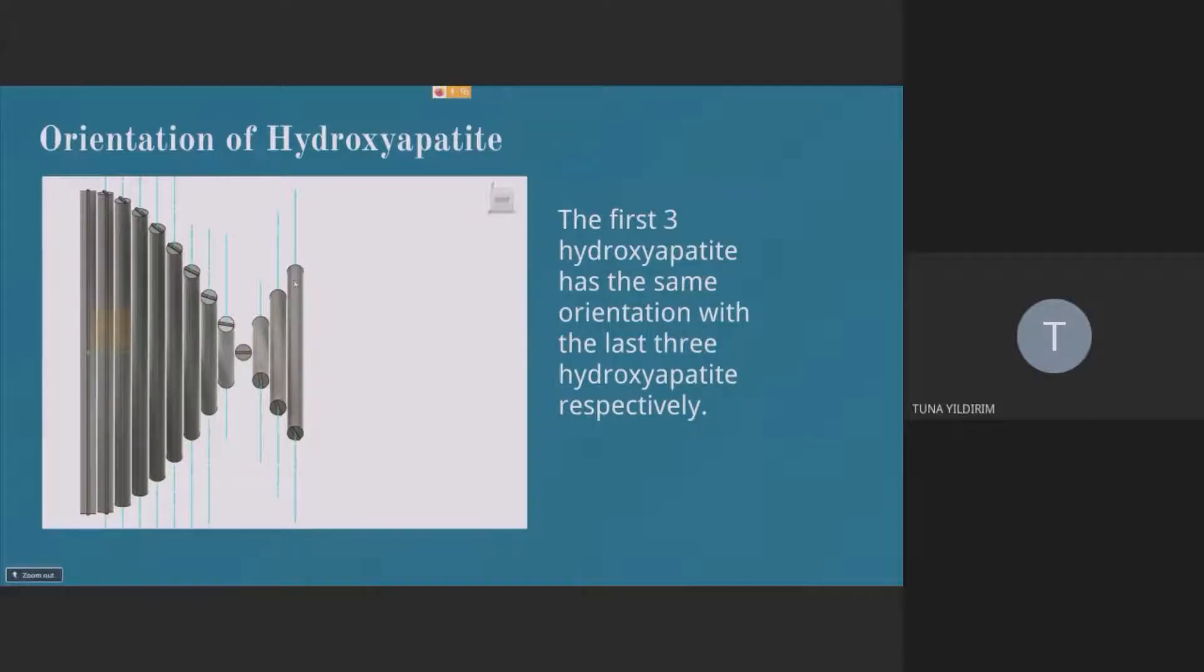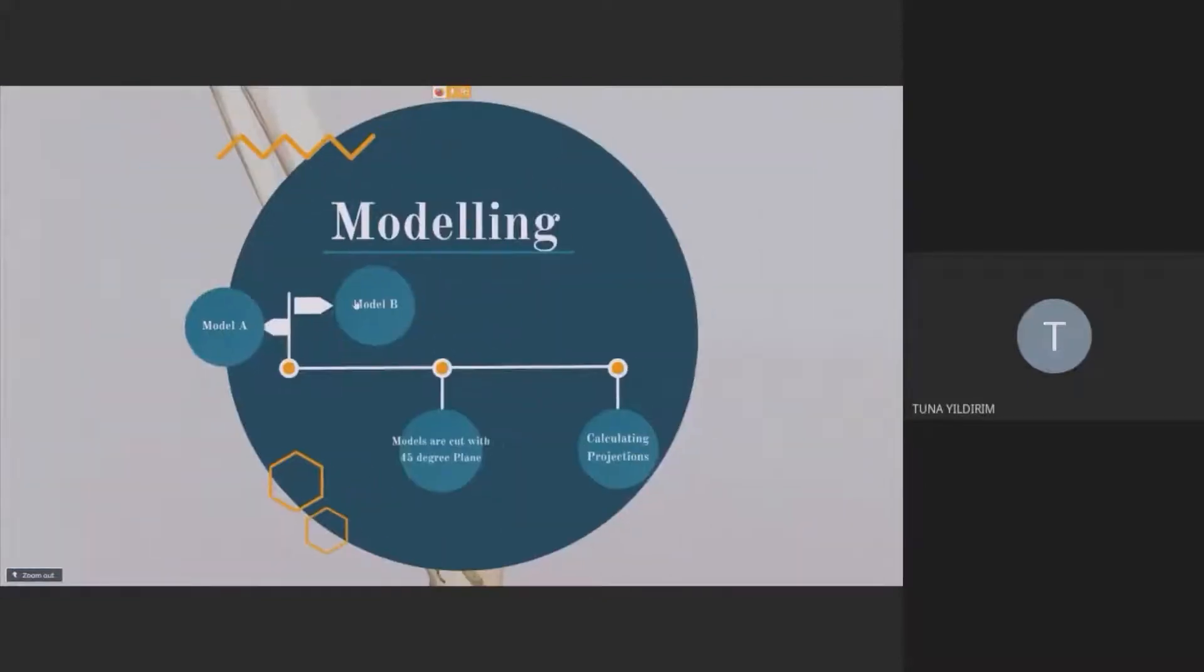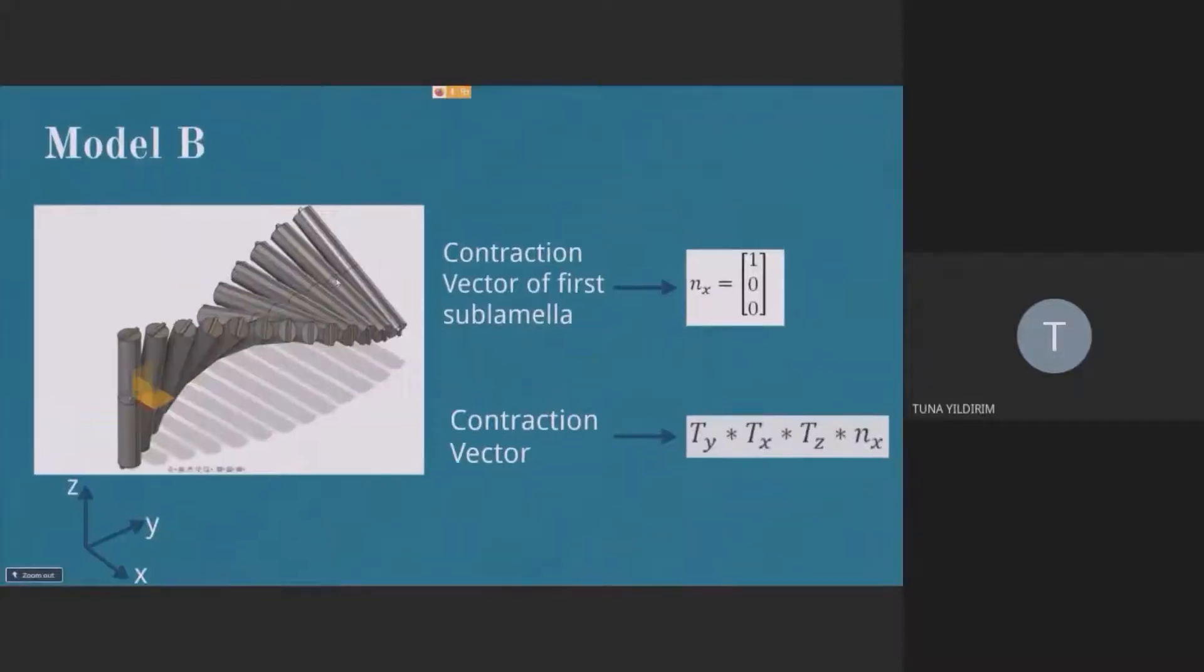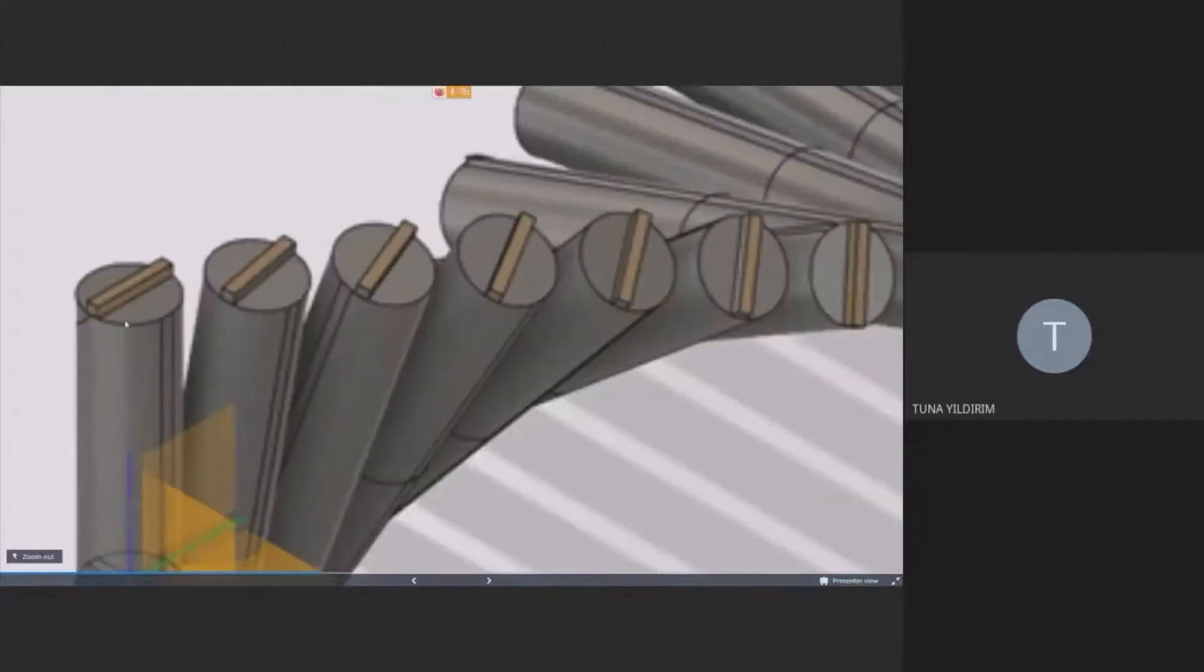This situation is not observed for model B. So if we examine model B, the main difference is their starting coordinates. The first contraction vector of model B is in the x-direction due to the thickness.